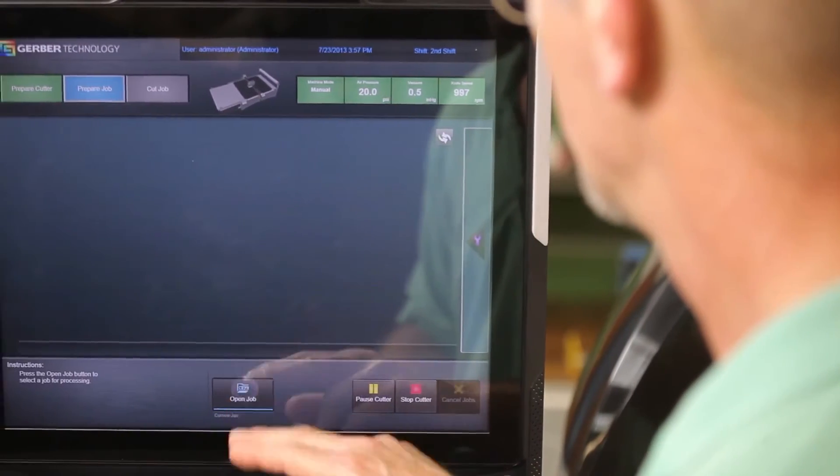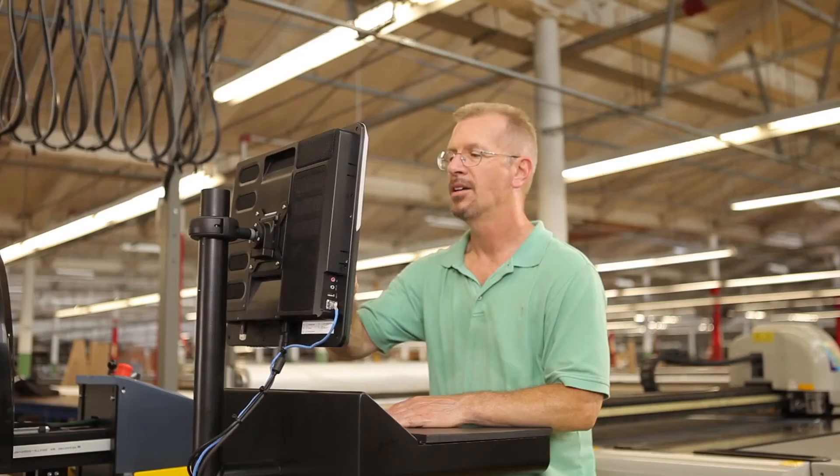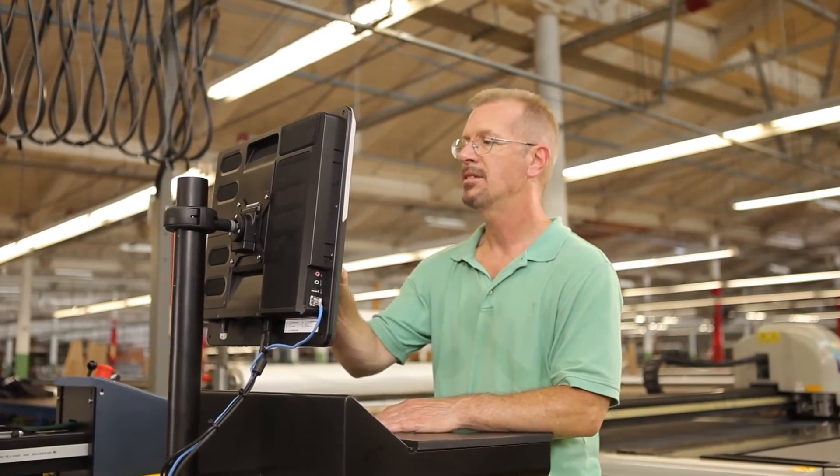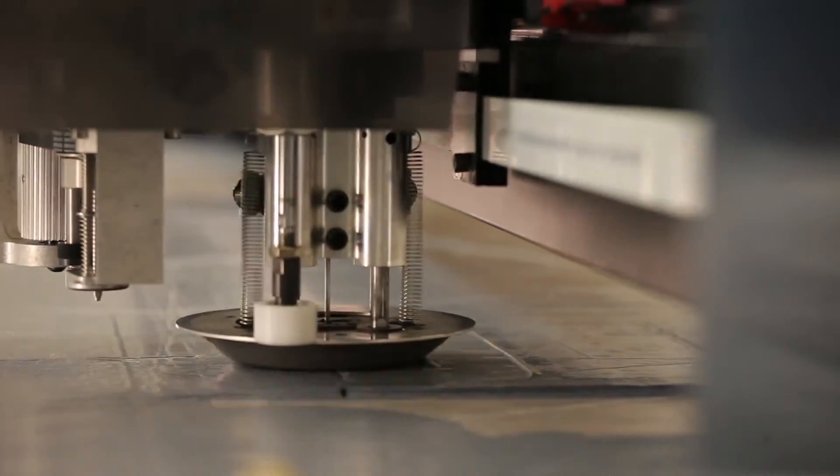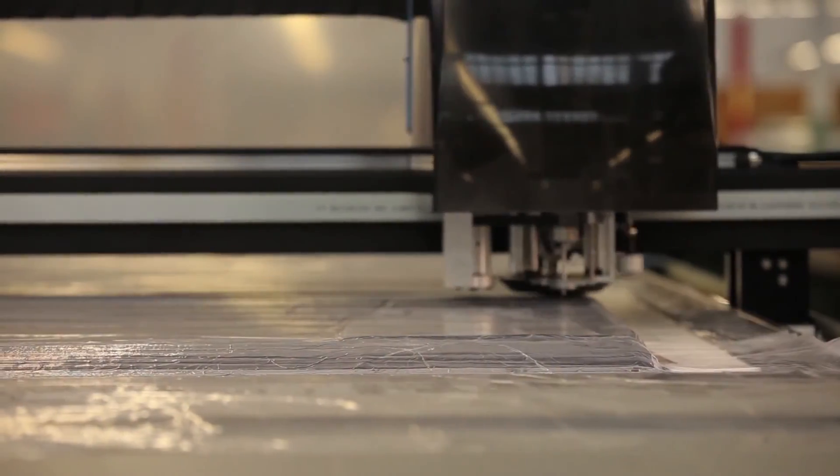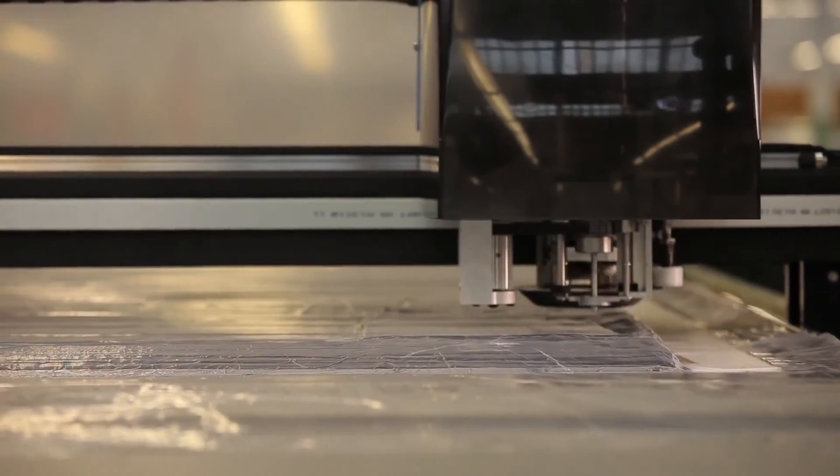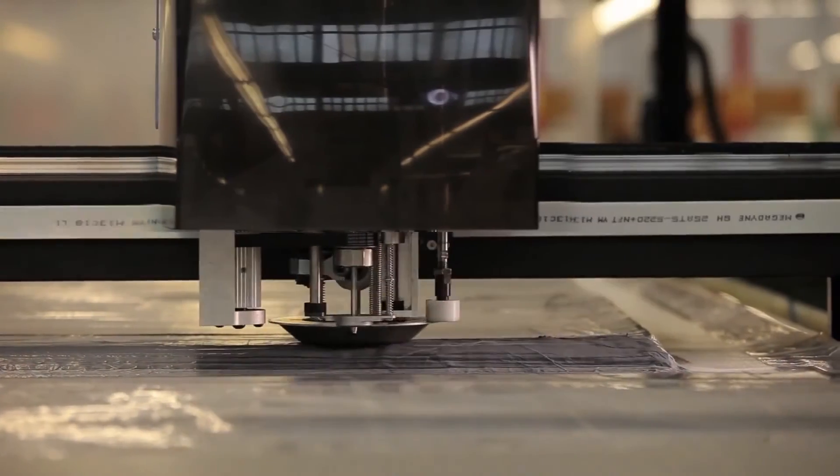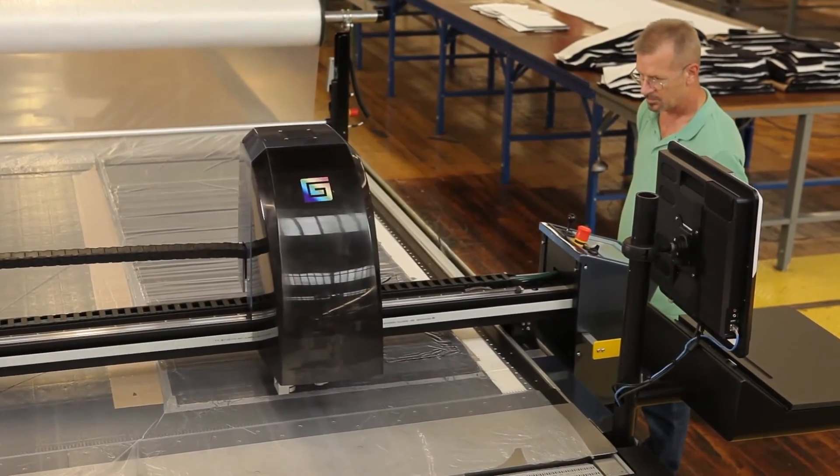Carrie is intelligent, capable of guiding operators through the entire cutting process. The operator simply chooses the job and Carrie does the rest. It adjusts cutting parameters automatically based on the type of material, the height of the spread, and the geometry of the parts. Carrie simplifies setup and minimizes idle time between jobs.